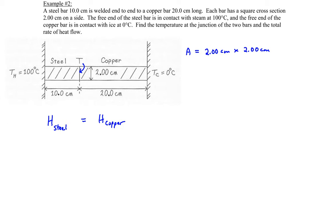Now the formula that we use for the rate of heat flow is the thermal conductivity, so we have steel, times the cross sectional area A, which is the same for both of them, times the change in temperature for the steel, divided by the length of the steel bar. And the same equation over here, but for copper.